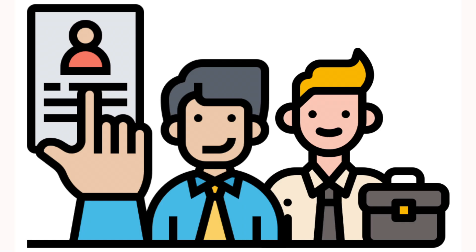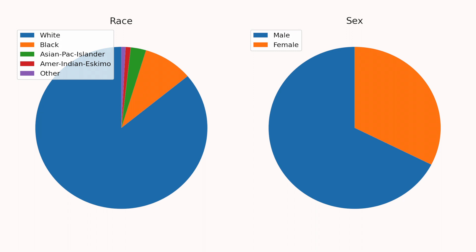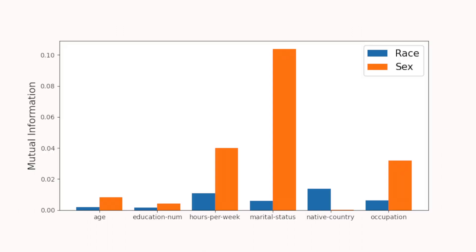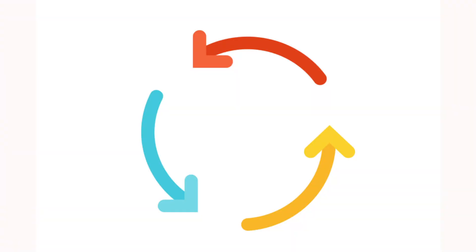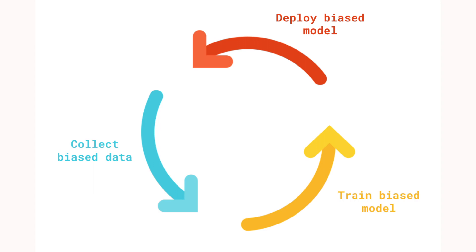That being said, our choices around algorithms can still amplify these biases. Data can be biased for different reasons: it can reflect historical injustice, it could be due to a lack of minority representation in our dataset, or it could be due to model features that are highly associated with sensitive attributes like race or gender. Critically, what we want to avoid is a negative feedback loop — if users interact with a biased model, this can produce more biased data, which can then reinforce bias in future model builds.